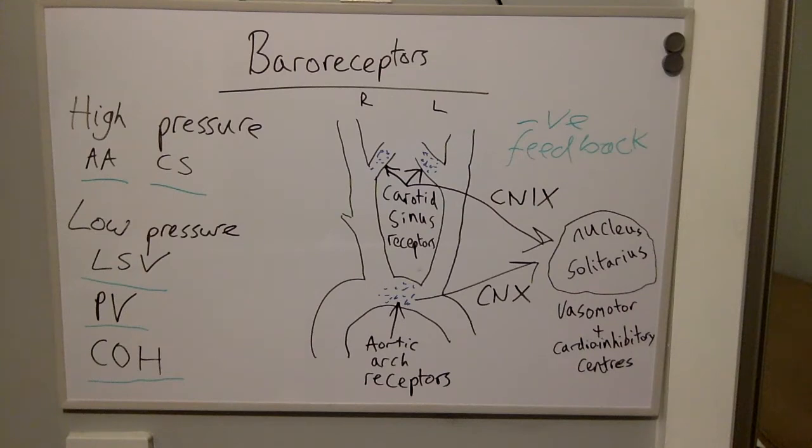With increased stretch or increase in blood pressure, there is an increase in the rate of firing in the baroreceptors within the aortic arch and the carotid sinus. This leads to increased transmission along cranial nerve 9 and cranial nerve 10, also known as the glossopharyngeal and the vagus nerve. These impulses are transmitted to the nucleus solitarius, where the vasomotor and cardioinhibitory centres are located.